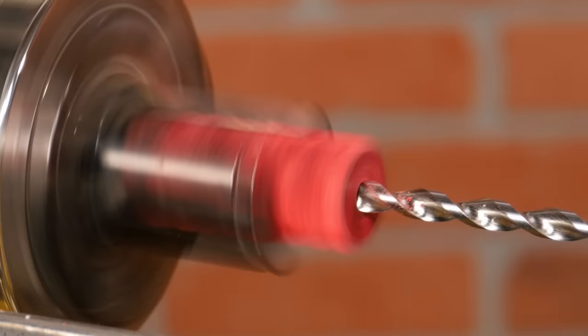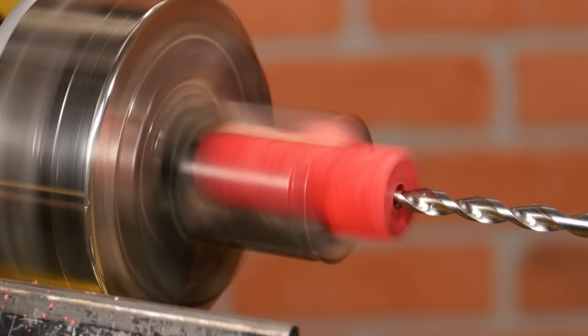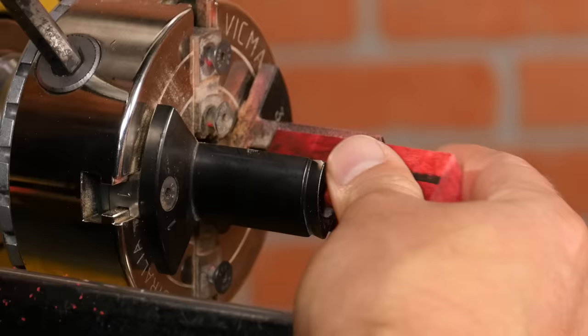Make sure to stop and back the drill bit out every half inch or so to clear the chips, keeping the blank from overheating. Continue until the bit exits the back of the blank then repeat with the second blank.